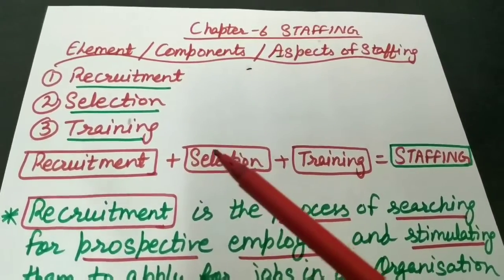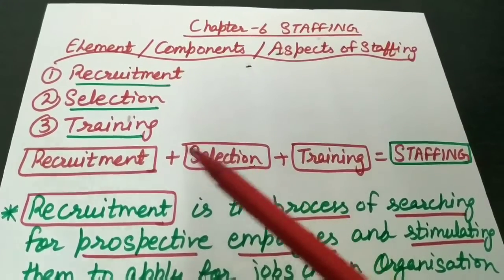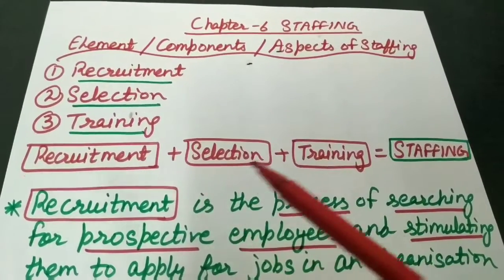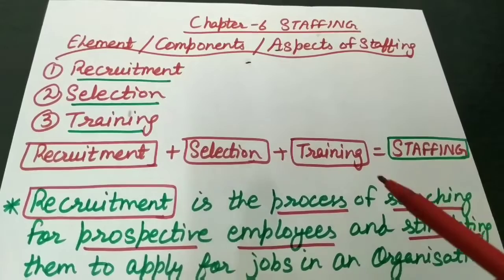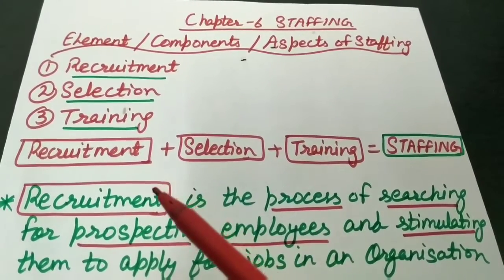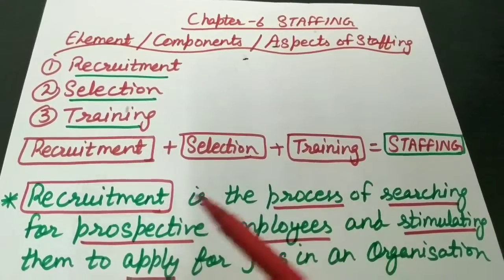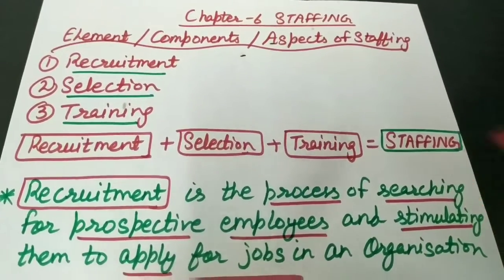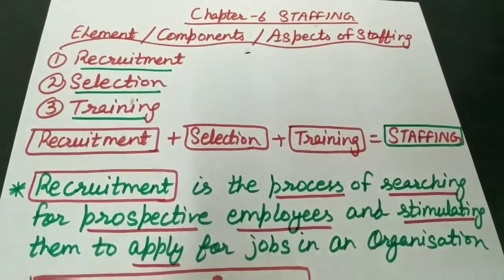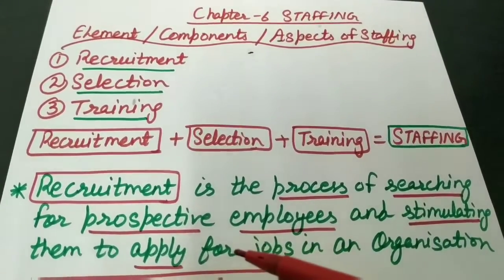The first element is recruitment, second is selection, and third is training. That is, recruitment plus selection plus training ka combination se staffing function banta hai. So when we add recruitment plus selection plus training, we get staffing. Let us start with the first element of staffing, that is recruitment.